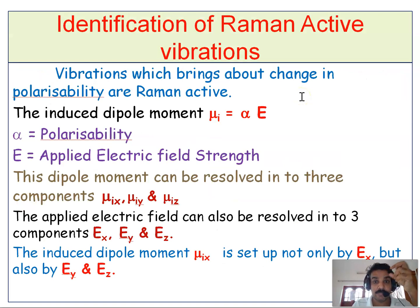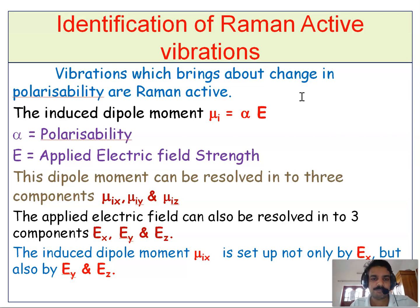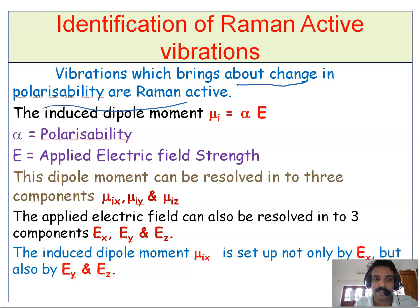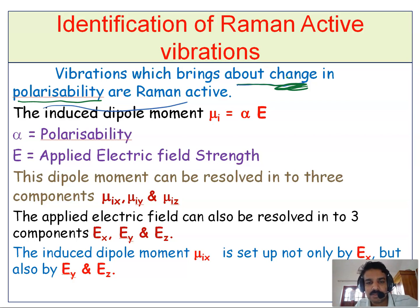In this video we are going to discuss the prediction of Raman active vibrations — which modes are Raman active. A vibration is Raman active if it brings about a change in polarizability of the molecule. For IR activity it is a change in dipole moment, and for Raman activity it is a change in polarizability. Change in polarizability is the condition for a mode to be Raman active.